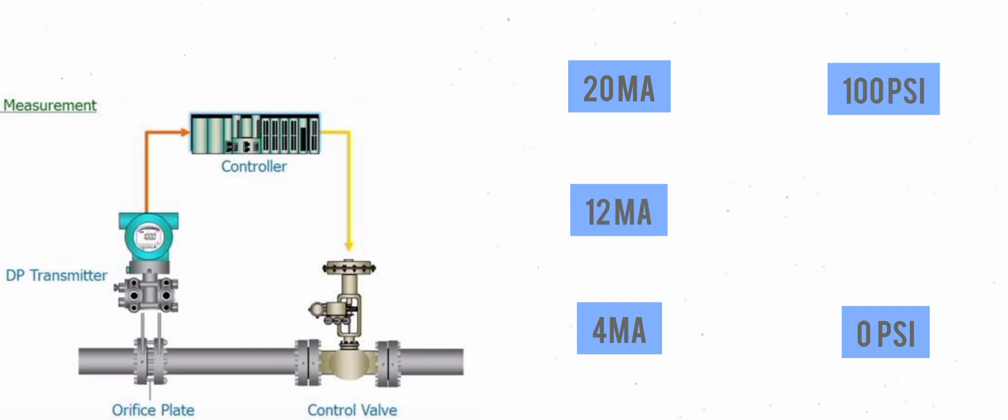Using these variables, we would know that a 12 milliamp signal would equal 50 psi. The relationship of the produced electrical signal to the units of measure is called the scaled output.